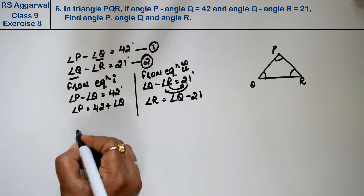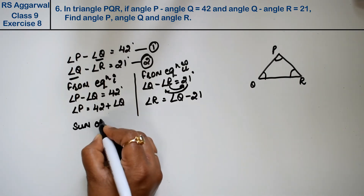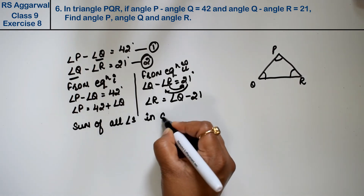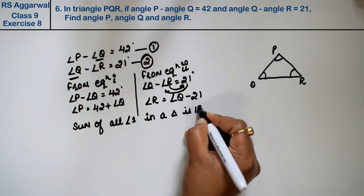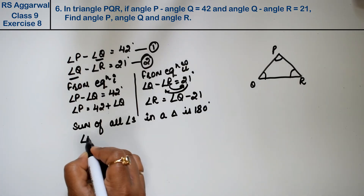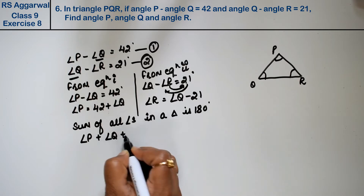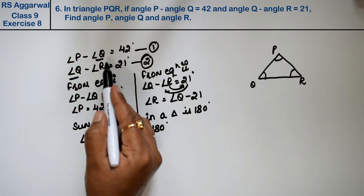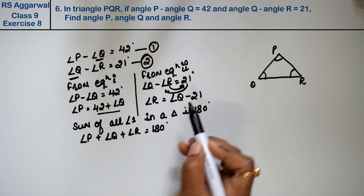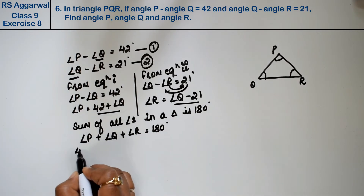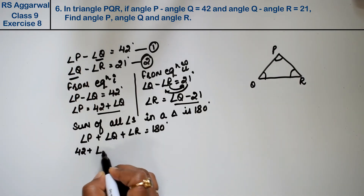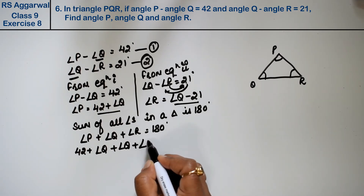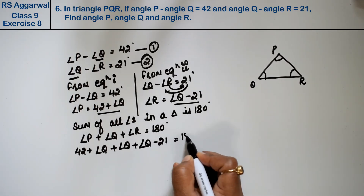The sum of all angles in a triangle is 180 degrees. So angle P plus angle Q plus angle R equals 180 degrees. Substituting: angle Q is angle Q, angle P is 42 plus angle Q, and angle R is angle Q minus 21. So: 42 plus angle Q, plus angle Q, plus angle Q minus 21 equals 180 degrees.